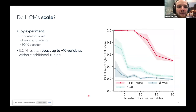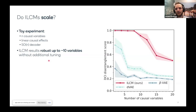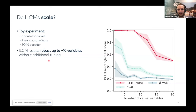Our scaling results use a toy experiment with Gaussian random variables and a linear causal model with a linear decoder restricted to be orthonormal — we also verified with randomly initialized neural networks. In this simple setting we found robust disentanglement up to 10 causal variables without hyperparameter tuning. I won't make predictions about how well this scales with much more complicated causal models and decoders — that remains an unanswered question.